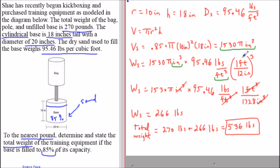When we expand this, one foot cubed is one cubic foot, and 12 inches cubed is 1728 cubic inches. Now the units cancel out: inches cubed cancels with inches cubed, and cubic feet cancels with cubic feet. When you multiply everything out, the weight of the sand is still 266 pounds, giving us a final answer of 536 pounds.